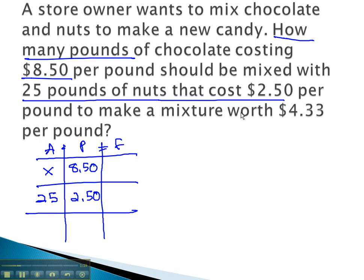And we're going to make a mixture. Our final solution is worth $4.433 per pound. That's the price on the final solution. To calculate the total amount, we simply need to add the amounts together: x plus 25.